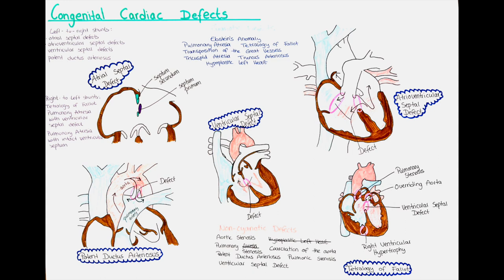Now we will talk about patent ductus arteriosus — when the ductus arteriosus does not close after birth. It should usually close within the first 15 hours after birth by contraction of the muscular wall, initiated by the increase in partial pressure of oxygen and the lack of prostaglandins previously provided by the placenta. The now-active lungs also metabolize prostaglandins circulating in the infant's blood. Factors preventing closure include high levels of prostaglandins, hypoxemia, and nitric oxide production, all of which relax the muscular wall.